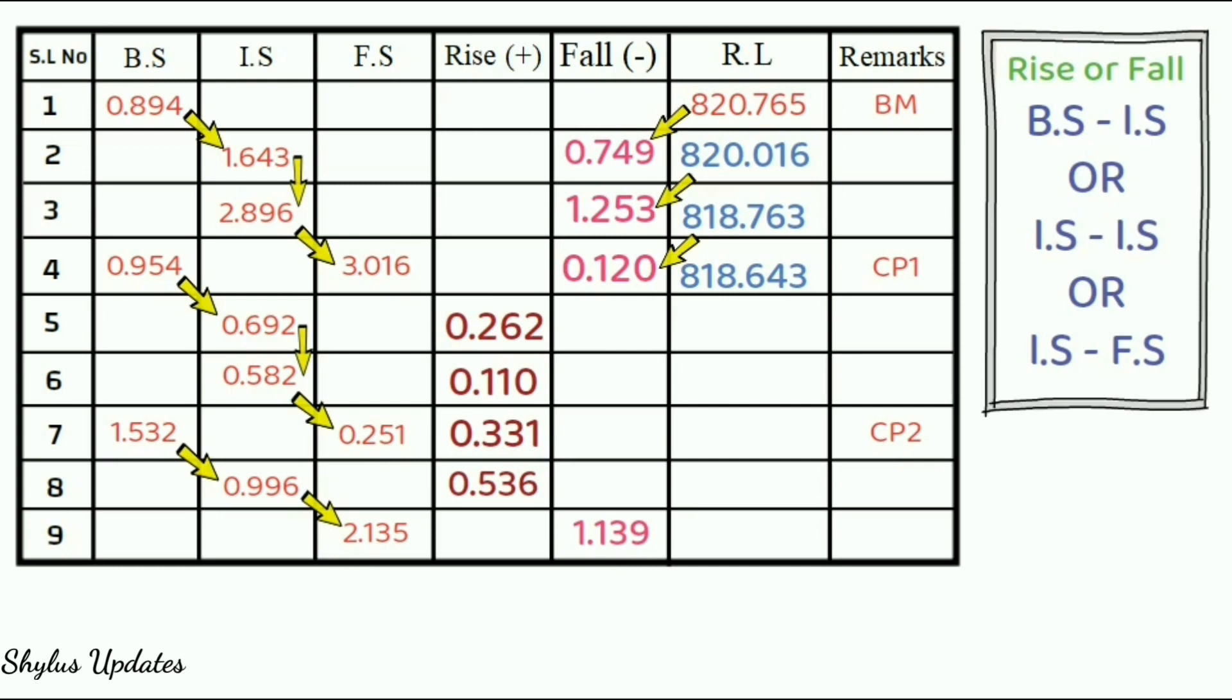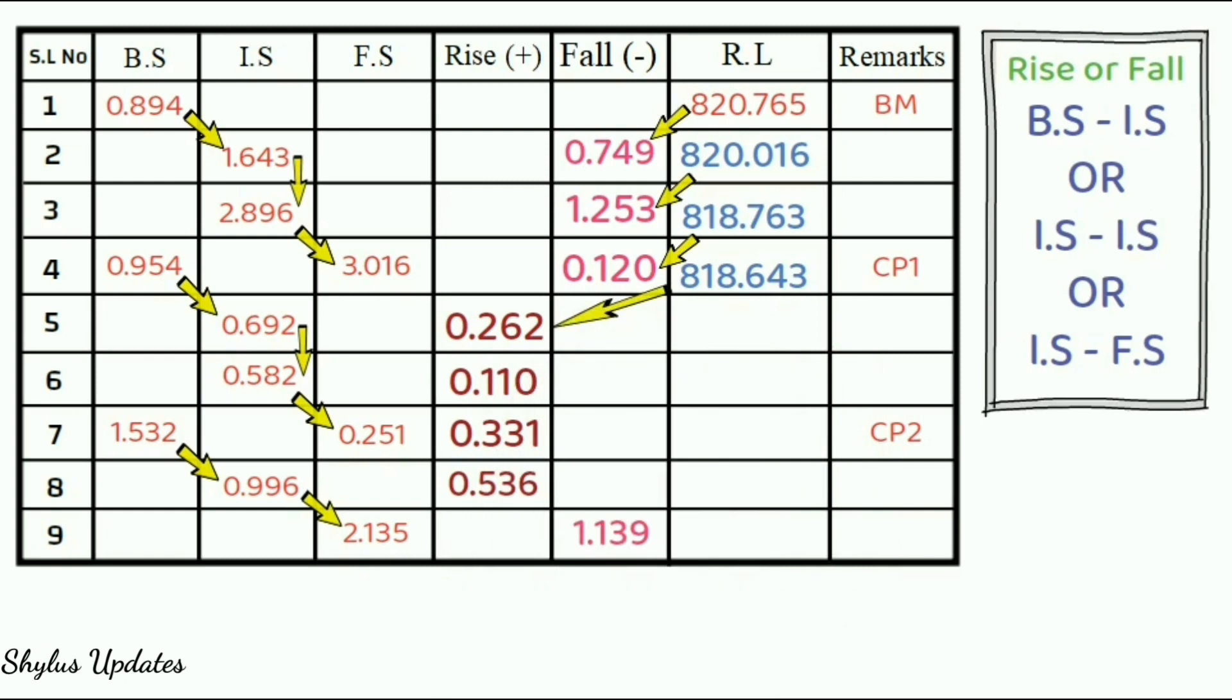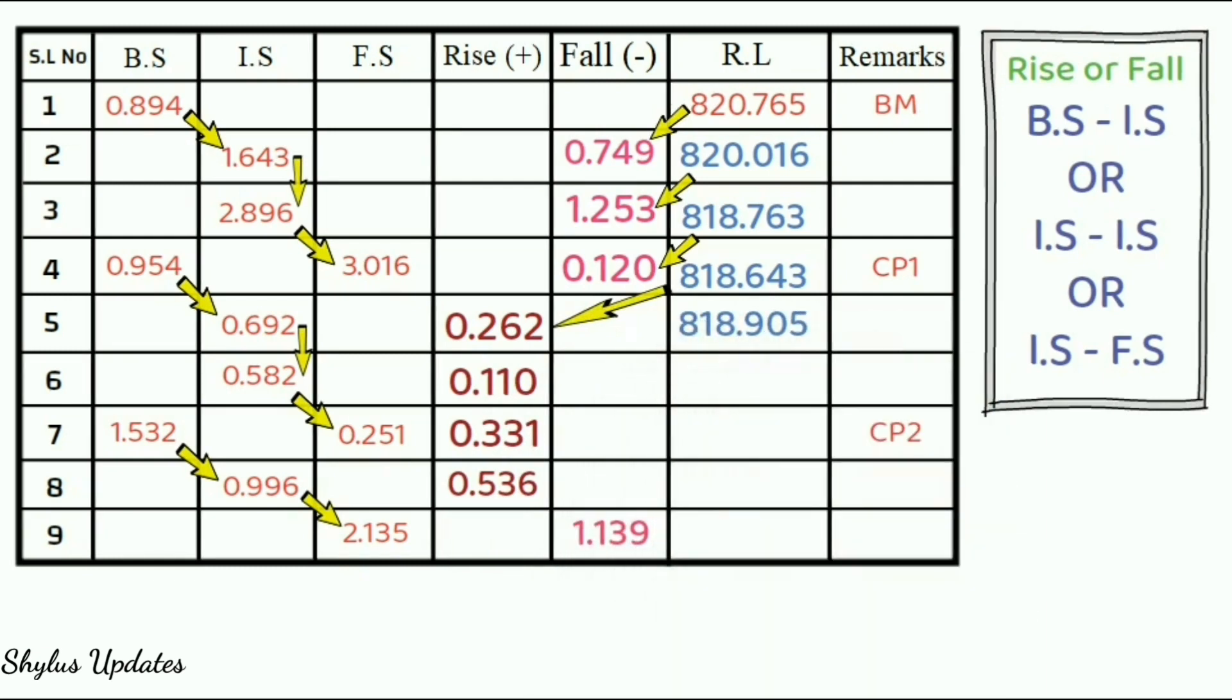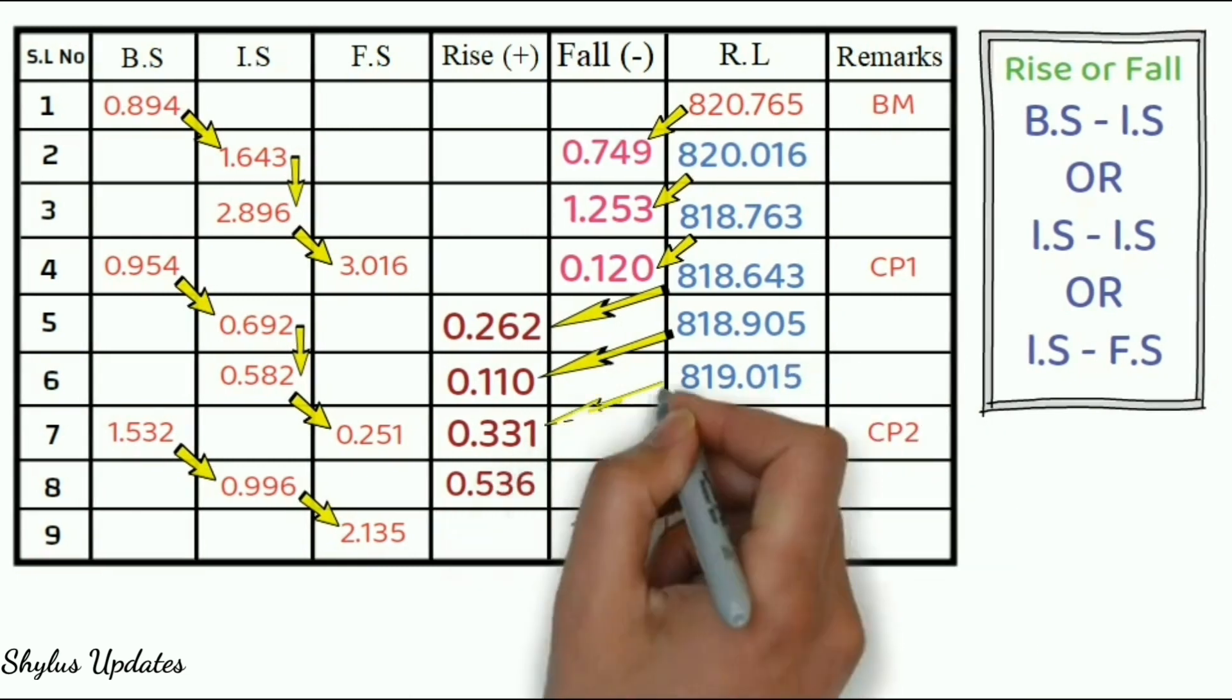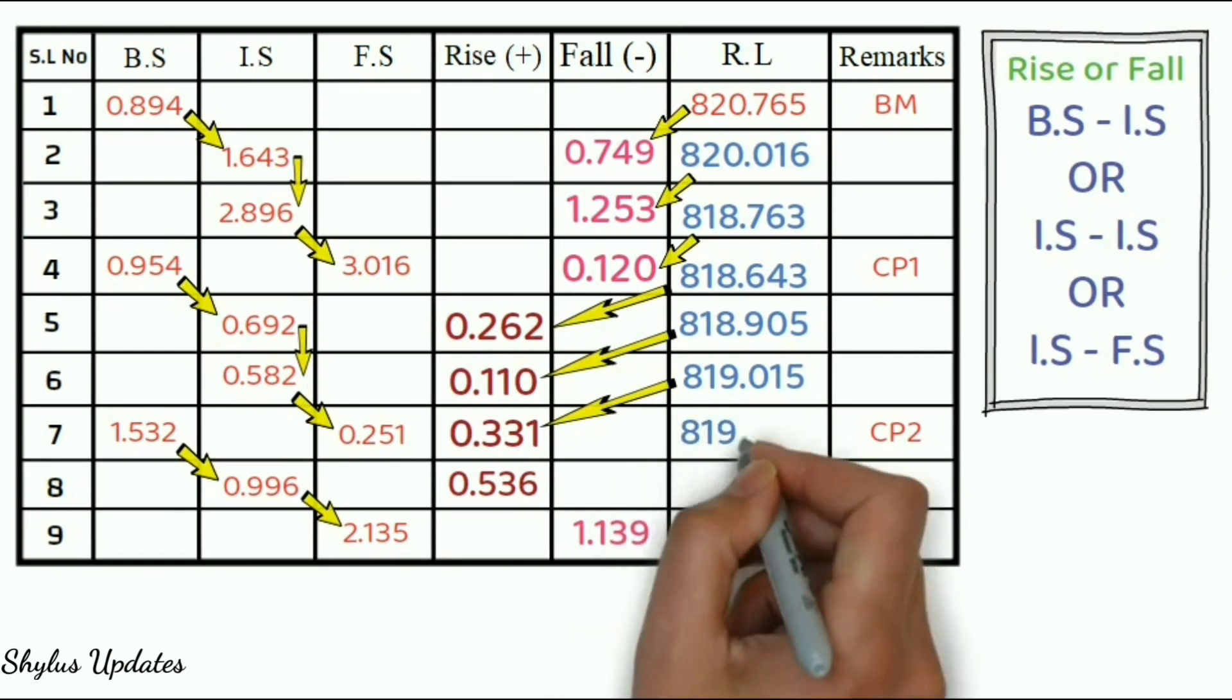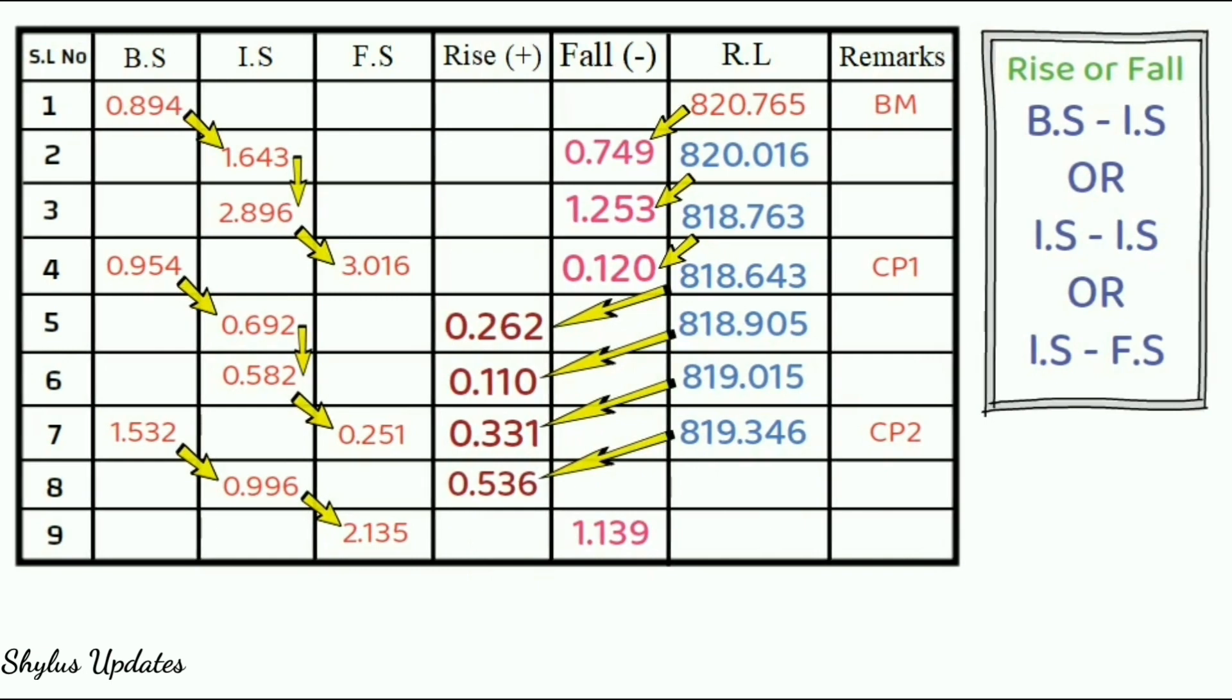Next, value is on rise. So, you have to add. That is, 818.643 plus 0.262, which is equal to 818.905. Next, 818.905 plus 0.110. We will get 819.015. Next, 819.015 plus 0.331. We will get 819.346. Next, 819.346 plus 0.536. We will get 819.882.